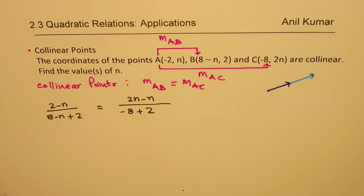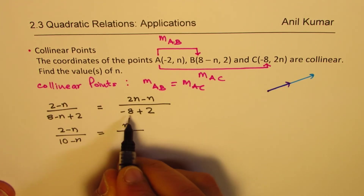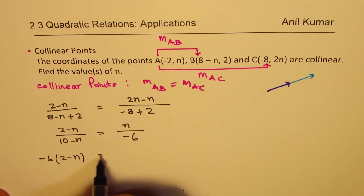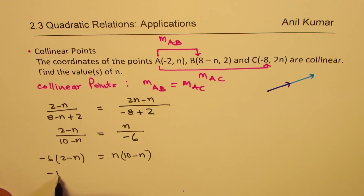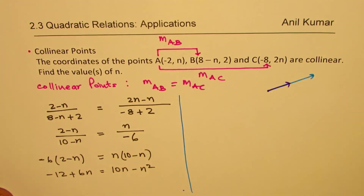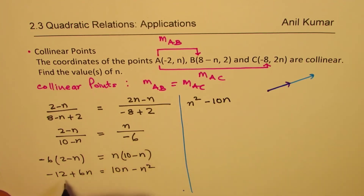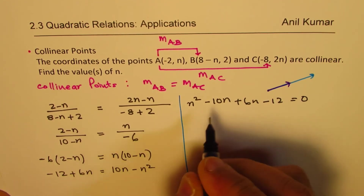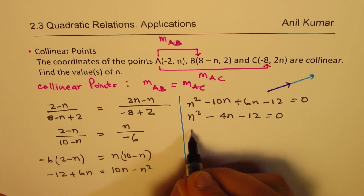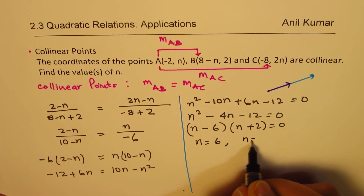Setting slopes equal and cross-multiplying: −6(2−N) = N(10−N). Opening brackets: −12 + 6N = 10N − N². Rearranging: N² − 4N − 12 = 0. Factoring: (N−6)(N+2) = 0, so N = 6 or N = −2.